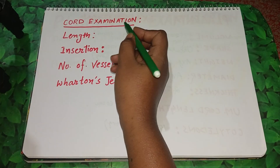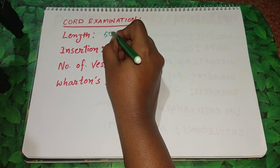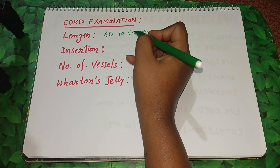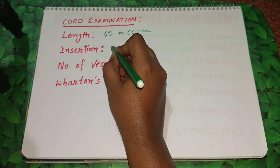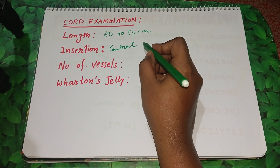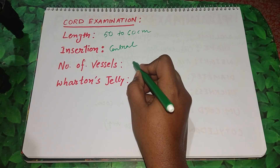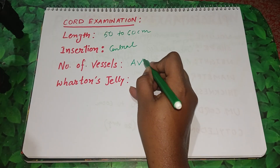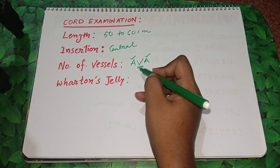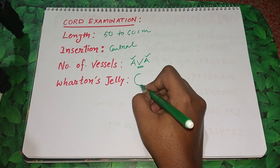Next we will examine the umbilical cord. We have already discussed the length, which is 50 to 60 centimeters in a normal placenta. Regarding insertion, normally the umbilical cord is centrally inserted on the fetal surface. As for the number of vessels, two arteries and one vein are present. We also check for the presence of Wharton's jelly.